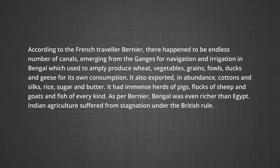Now come to the development in the agricultural sector or the state of the agricultural sector during the British period. Before the British came to India, the agricultural situation in the country was very satisfactory. According to the French traveler Vernier, there happened to be endless number of canals emerging from the Ganges for navigation and irrigation in Bengal, which used to amply produce wheat, vegetables, grains, fowls, and ducks for its own consumption.